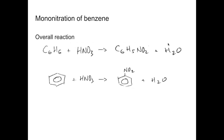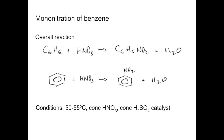Another way to represent that reaction is like that. Now there are some conditions for this reaction. It needs to be carried out at between 50 and 55 degrees Celsius. And we need to use concentrated nitric acid and concentrated sulfuric acid, which is actually acting as a catalyst, as you will see when we look at the mechanism next.